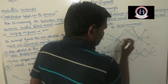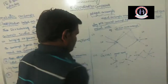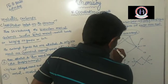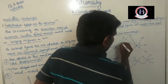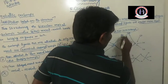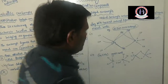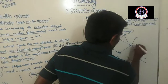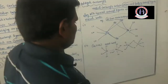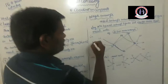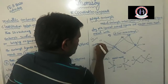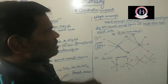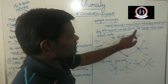In di-iron nonacarbonyl, there is bridging and non-bridging character. The iron is attached with carbonyl CO groups — three CO groups — bridging with another iron, which is the central metal atom. Only one isomer is possible for di-iron nonacarbonyl in its bridging form.